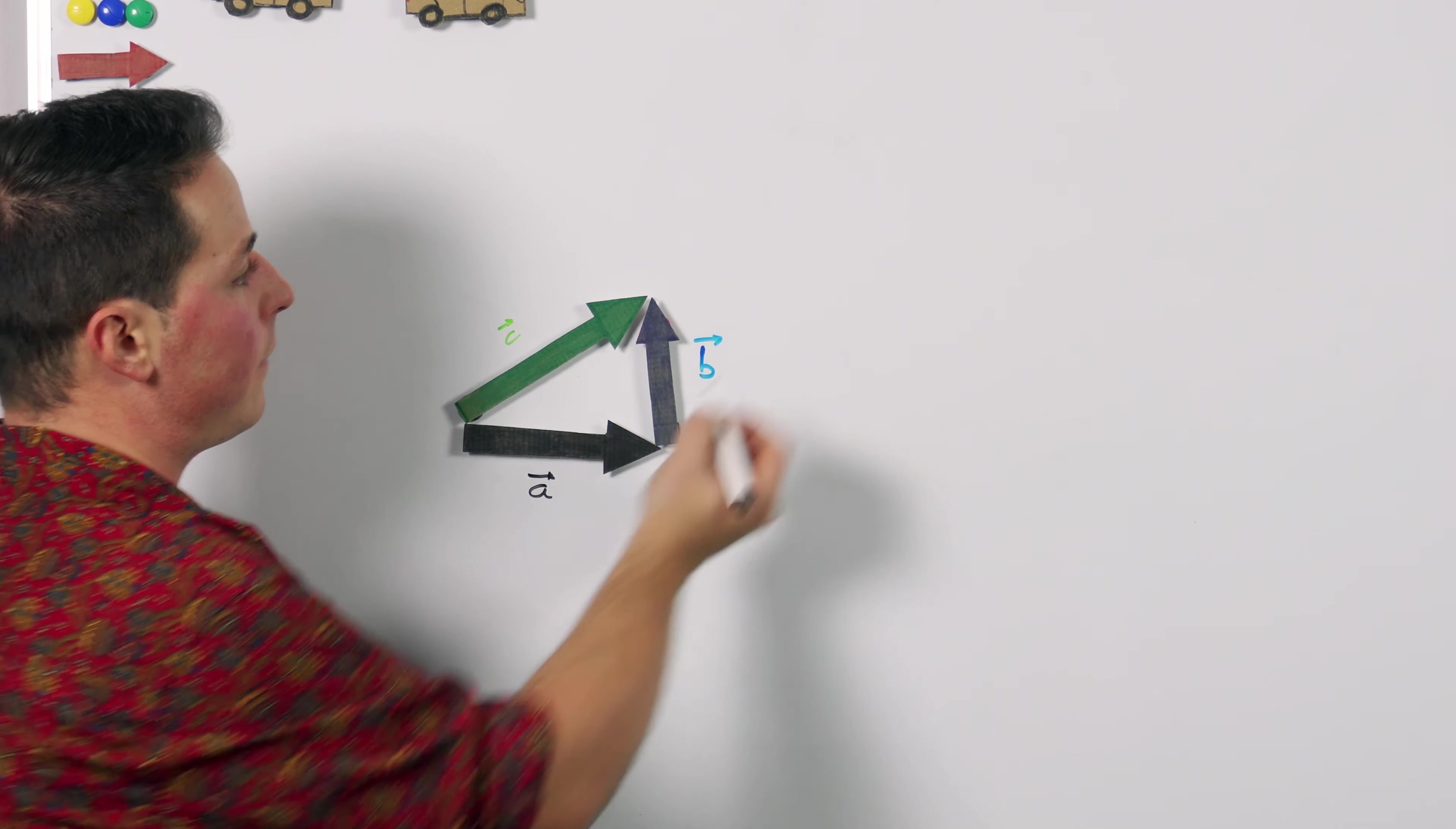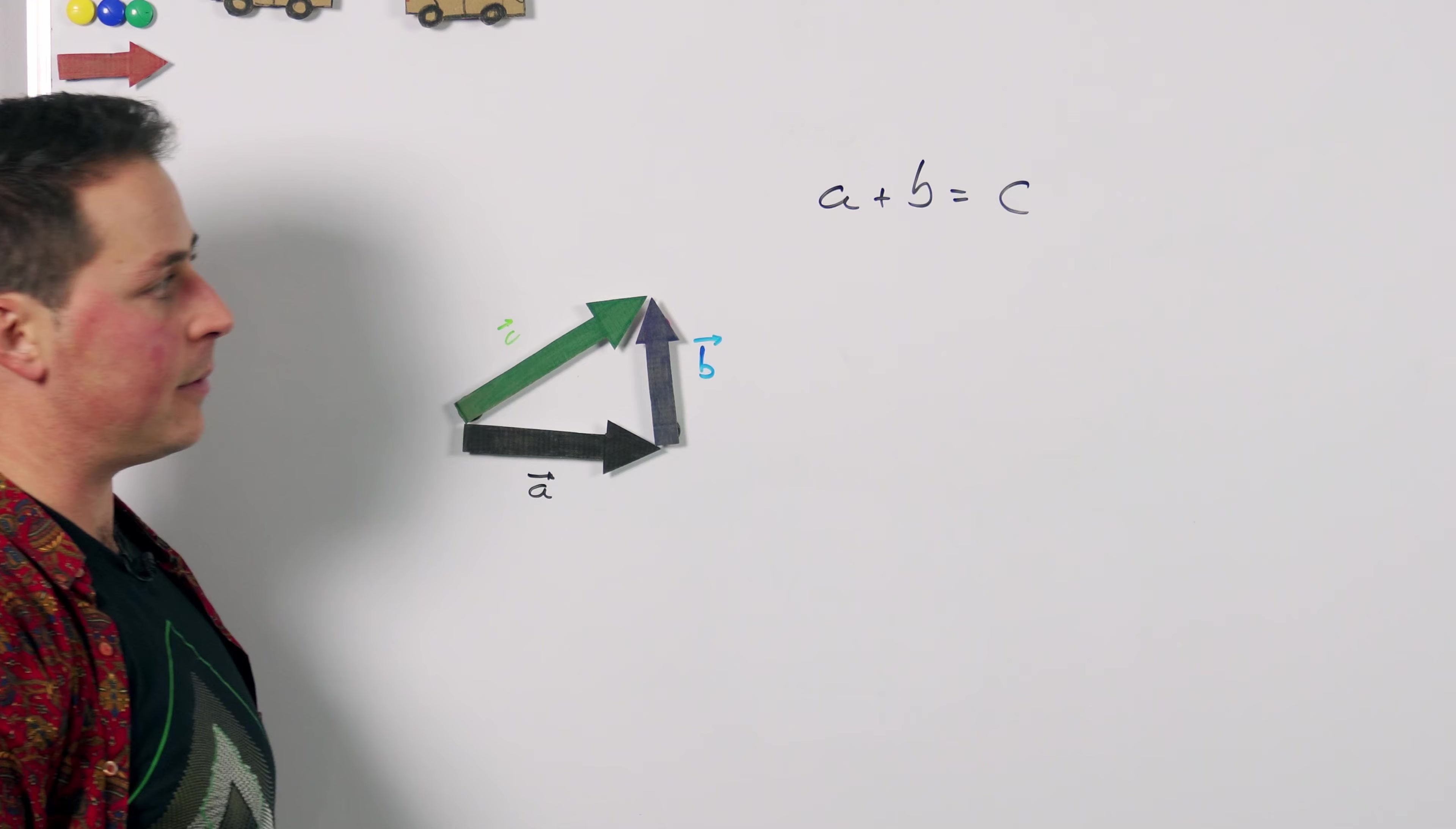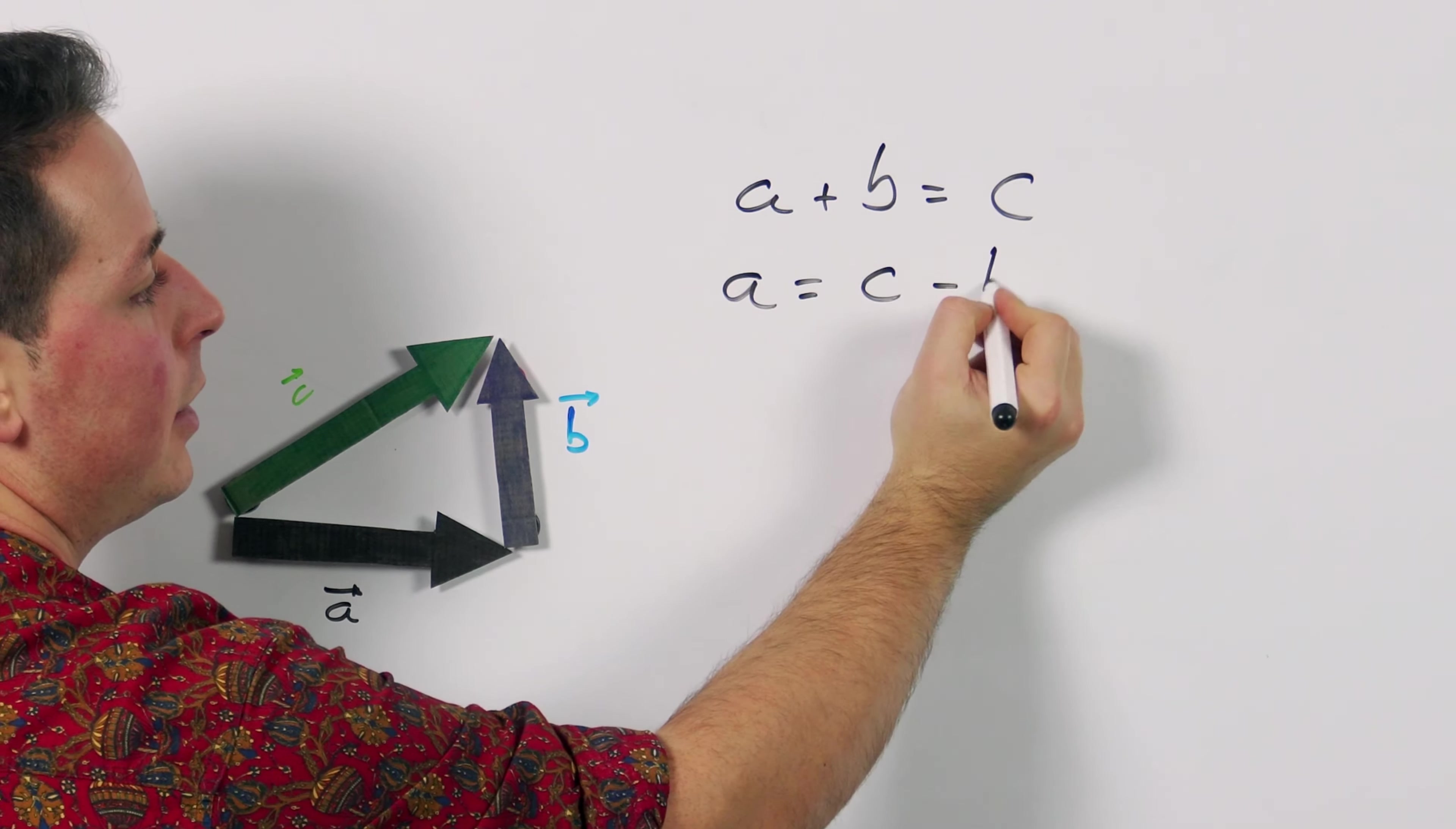We saw in the previous video that if we represent vectors with arrows, adding them together is simply putting one after the other. Here we have a plus b equals c, but if we play with it a little bit we can see that a equals c minus b.